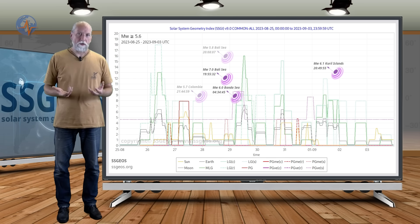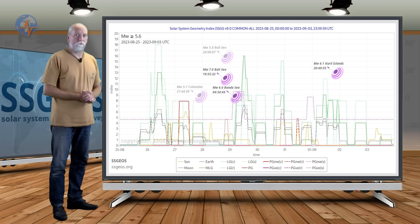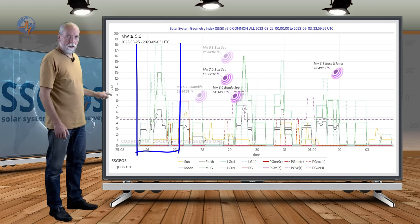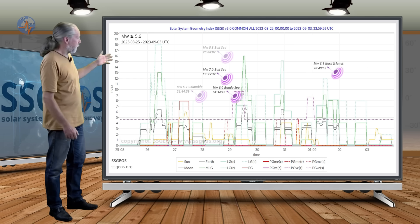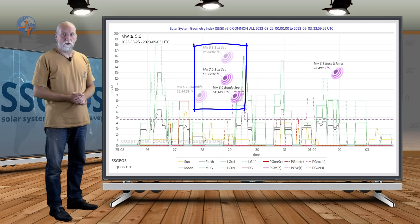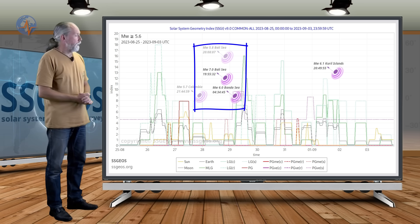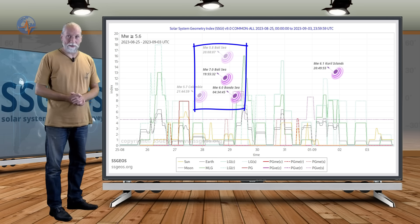Looking at what actually happened on the SSGI graph for magnitude 5.6 and larger, we see the high lunar peak indicating the critical lunar geometry with Mars and Neptune. It was followed by a clustering of stronger seismic activity around the 28th, two days later, and included a magnitude 7 earthquake deep below the Bali Sea.